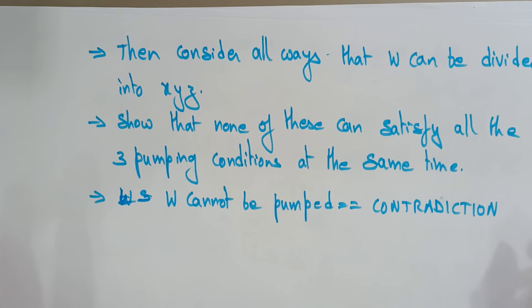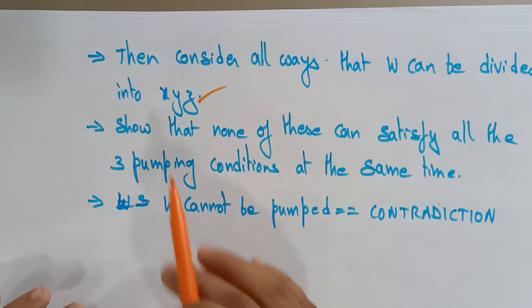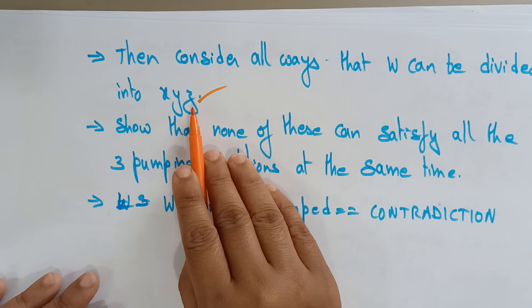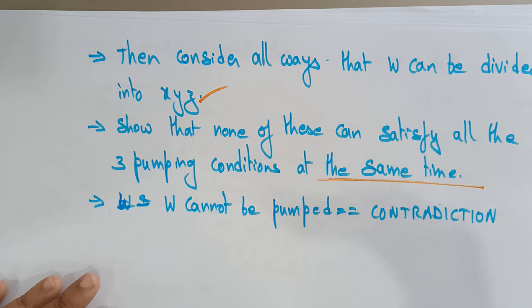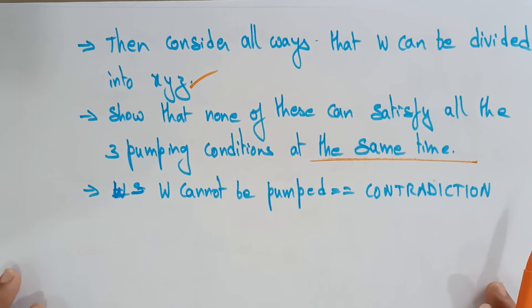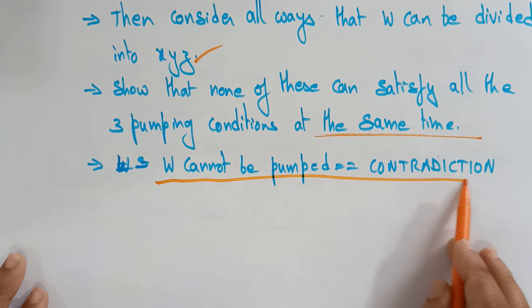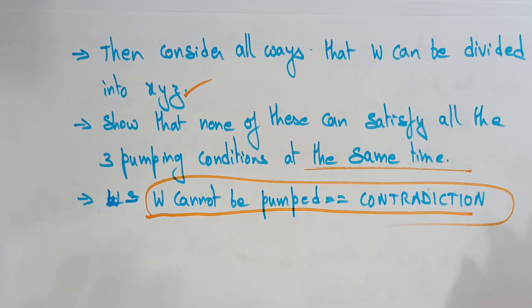Then consider all ways that W can be divided into X, Y, Z. Show that none of these can satisfy all three pumping conditions at the same time. Then W cannot be pumped, which gives us the contradiction. So let's take an example in the next video, then you can clearly understand how to prove that a language is not regular using the pumping lemma. Thank you.